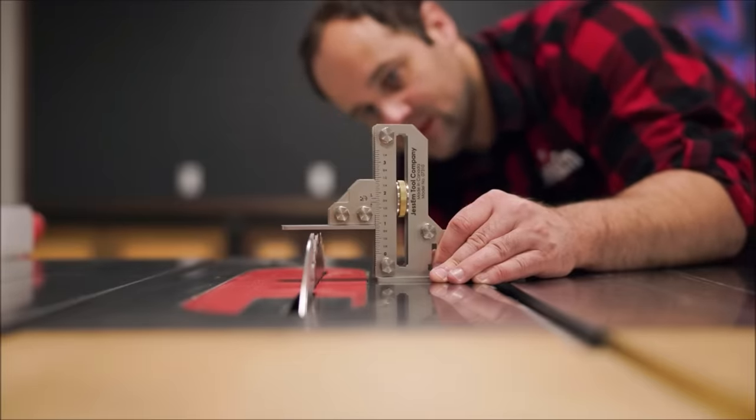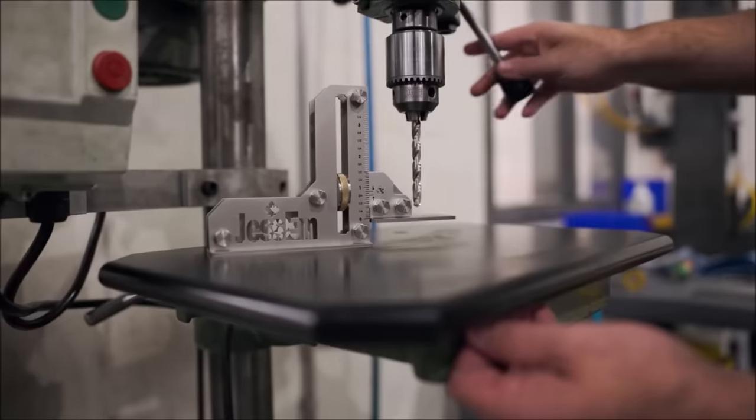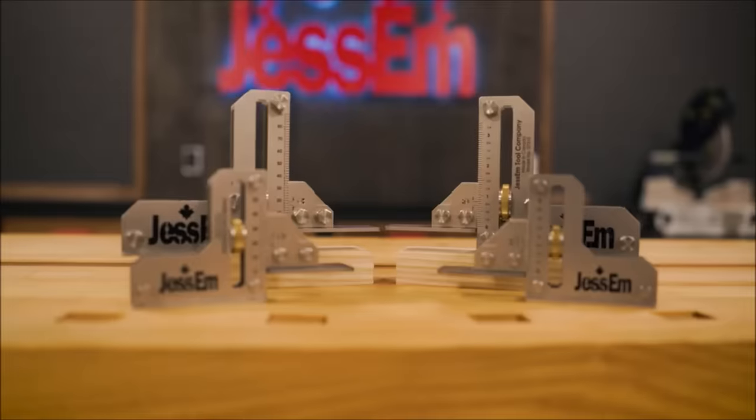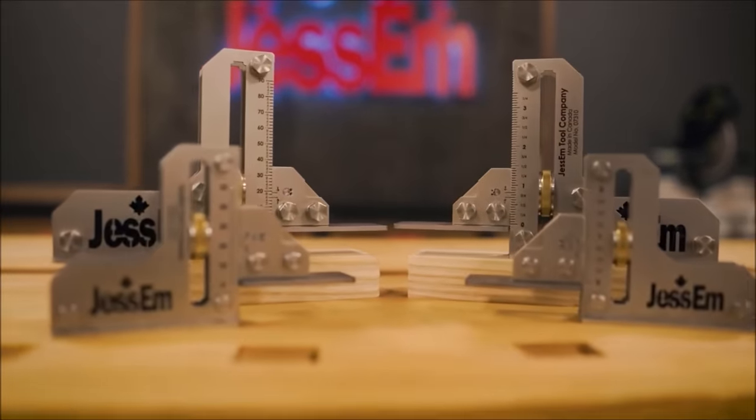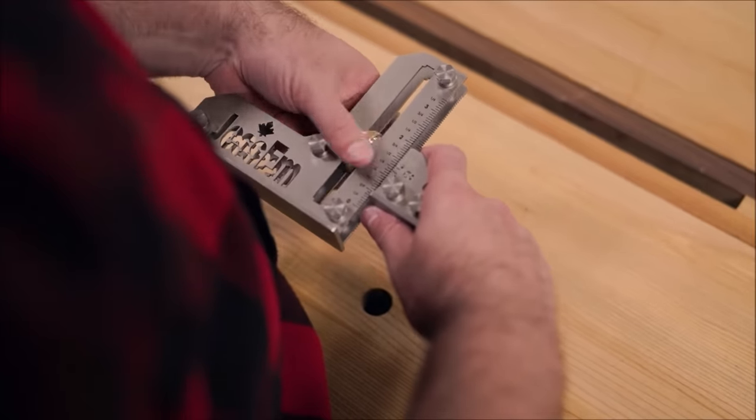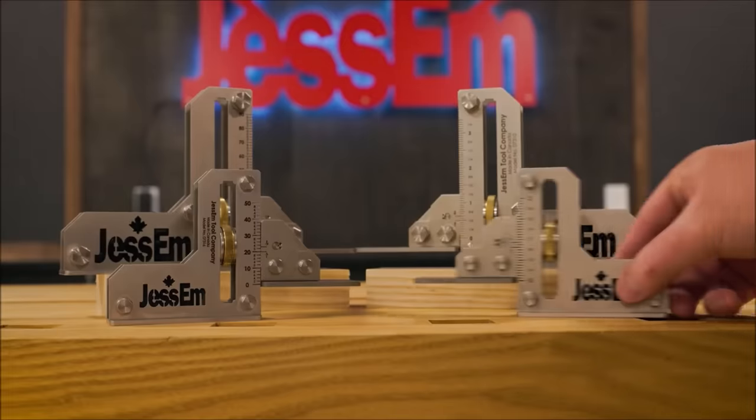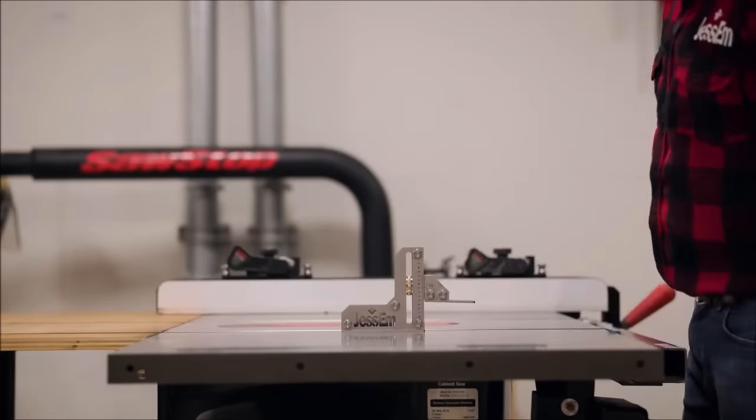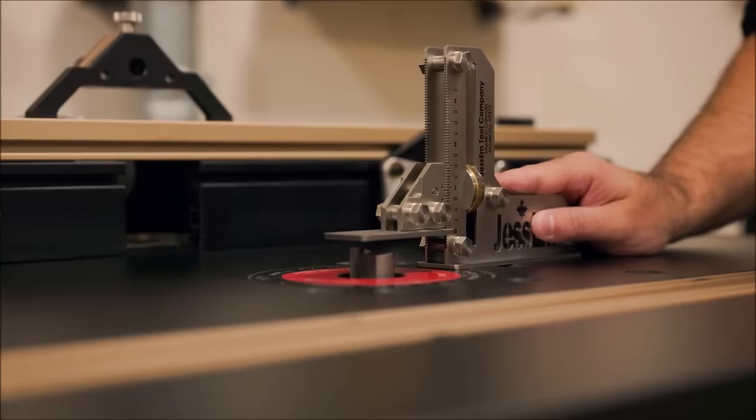Number 6. The Jessam Setting Gauge is a masterpiece of precision engineering, offering both a large and small option to cater to your workshop's unique needs. Crafted with meticulous attention to detail, the outer shells are constructed from durable 14-gauge stainless steel, providing robustness for long-term use. The internal components, also made of stainless steel, are machined in-house on Swiss lathes, ensuring top-notch quality. The tightening wheel, a critical element, is crafted from machined brass, enhancing durability and allowing for ultra-smooth adjustments.